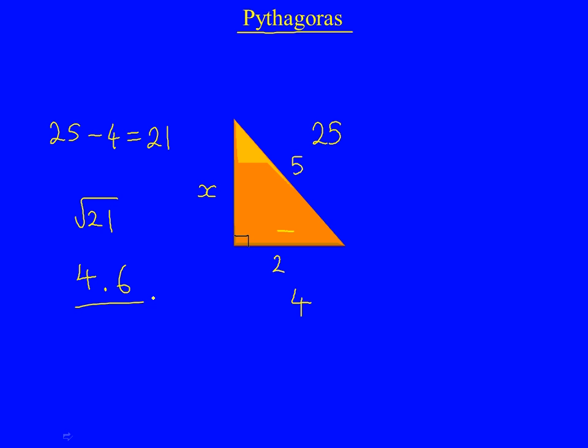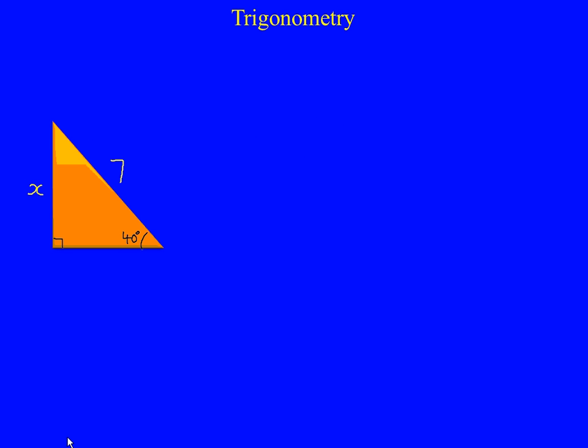So remember, with Pythagoras, the important thing to do is decide whether it's an add or a takeaway question, and then square the sides, and remember to square root it at the end. Okay, let's go through the next example.